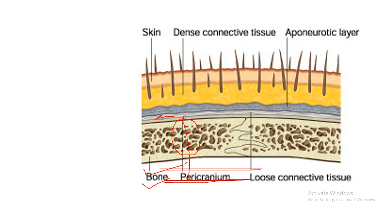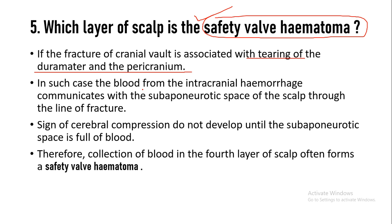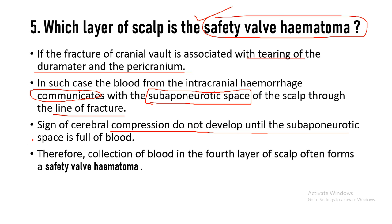Whatever blood is present will come out and collect into the fourth layer — the sub-aponeurotic space. The advantage is that blood is not accumulating inside, so pressure symptoms on the cerebrum will not appear until this space fills with blood — that is why it acts as a safety valve. The blood from intracranial hemorrhage communicates with the sub-aponeurotic space through the line of fracture. The signs of cerebral compression do not develop until the sub-aponeurotic space is full of blood. Therefore, the collection of blood in the fourth layer is known as the safety valve hematoma.